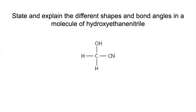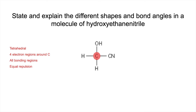We'll start with the easiest one — this carbon here. The shape around that carbon is tetrahedral, and the explanation is we've got four electron regions around the carbon. You can see them clearly: those four bonds are all bonding regions, so the repulsion will be equal, and the associated angle will be 109.5 degrees.